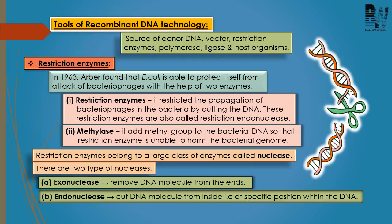An important point to remember: restriction enzymes are produced by prokaryotic organisms. Restriction enzymes belong to a class known as nucleases, and nucleases are of two types: one is endonuclease and one is exonuclease. Exonuclease is an enzyme which can cut DNA from the ends, while endonuclease — specifically restriction endonuclease — is an enzyme which can cut DNA from inside, at a specific position.